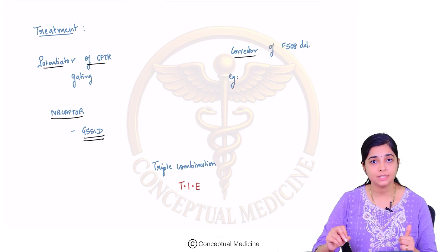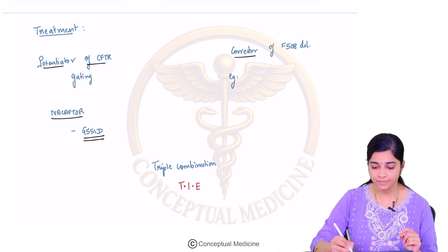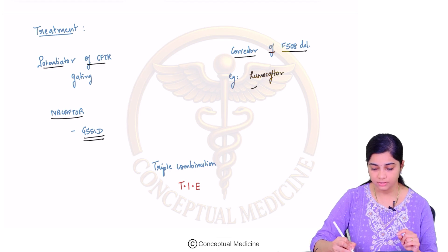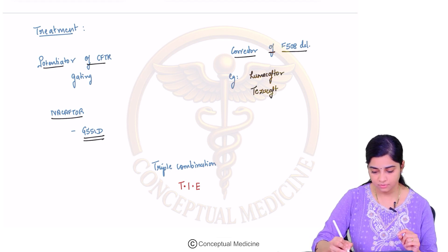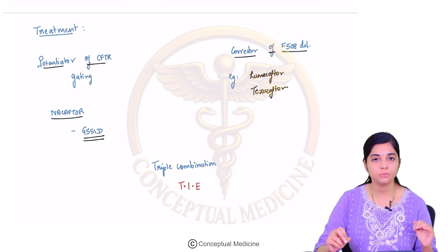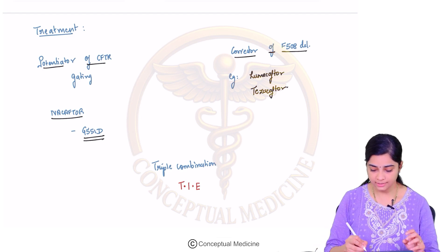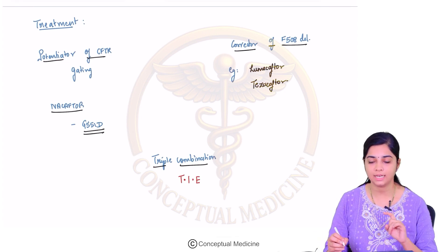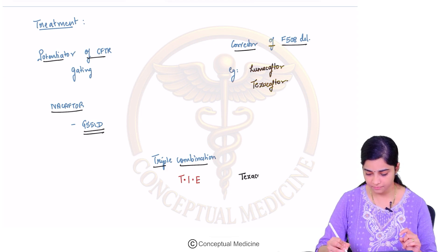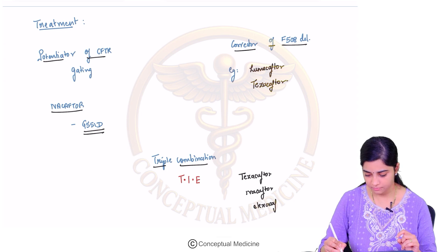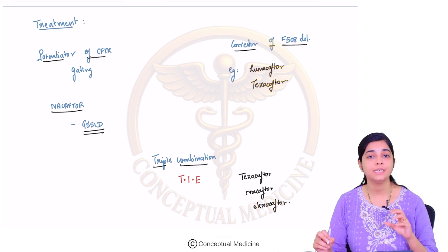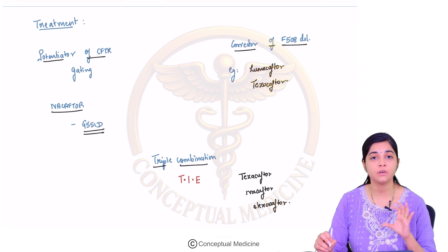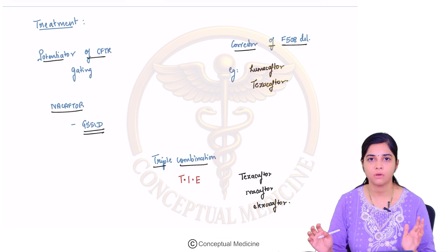Correctors are drugs that act on class 2 defects, correcting the F508 deletion. Examples include lumacaftor and tezacaftor. The latest treatment option is triple therapy, remembered with the mnemonic TIE: Tezacaftor, Ivacaftor, and Elexacaftor — this is the triple combination therapy for cystic fibrosis.